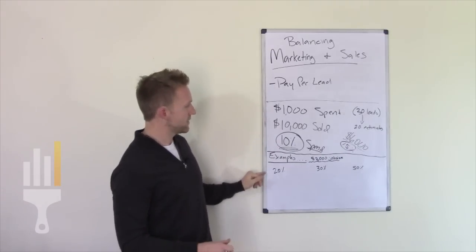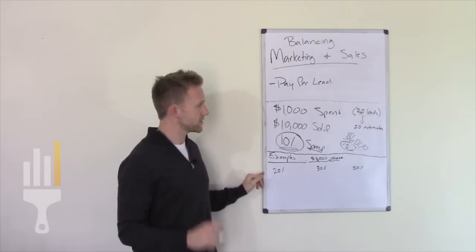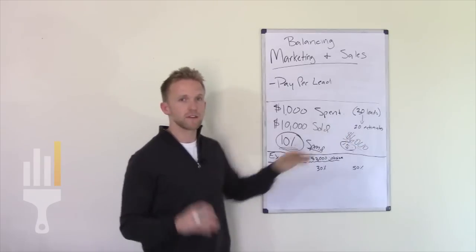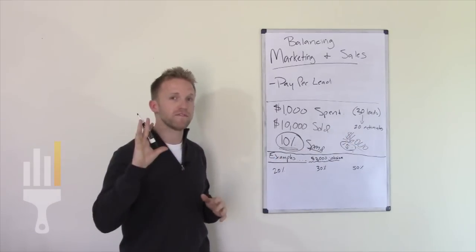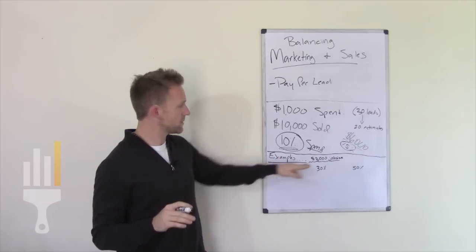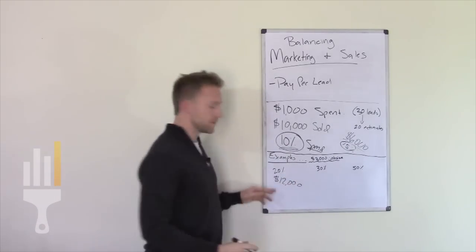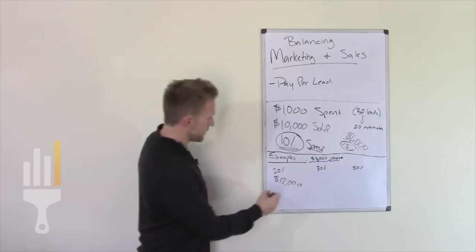Now let's look at that example again, and let's see if we do it with 20%, if we have a 20% closing rate, so now with a $3,000 job size. So now we do 20 estimates, 20% close rate, we book four jobs, and four jobs at $3,000 is $12,000. All right, so $12,000, now we're under 10%.